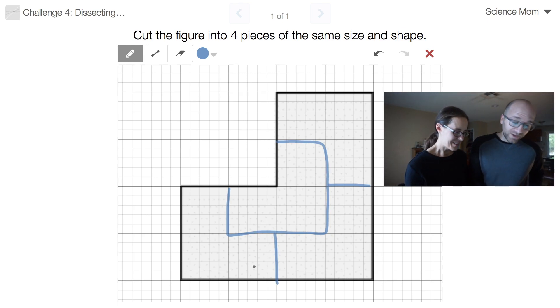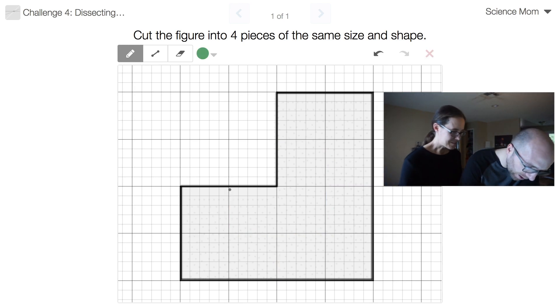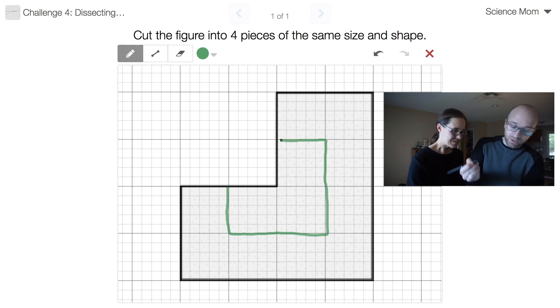I guess one cool thing I could point out is that each of these four smaller shapes that you've drawn are identical in shape to the larger original shape. They all make little L's. Pretty cool.